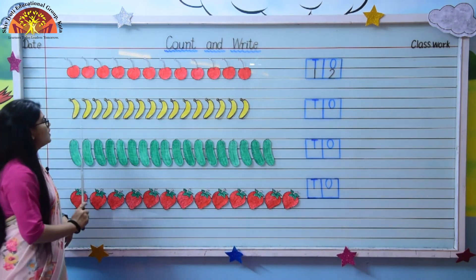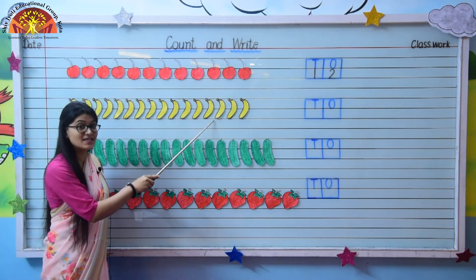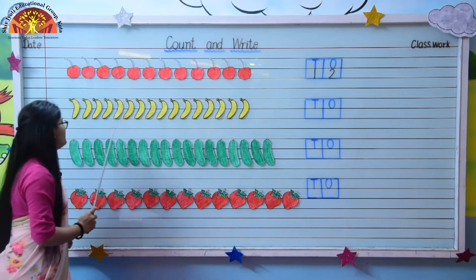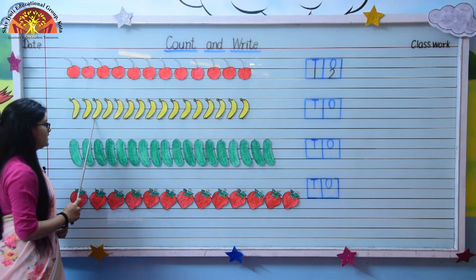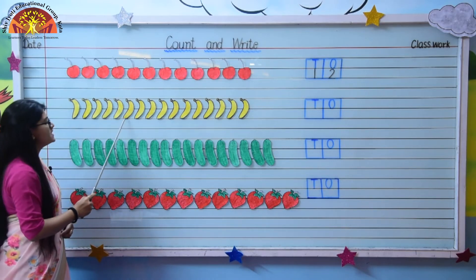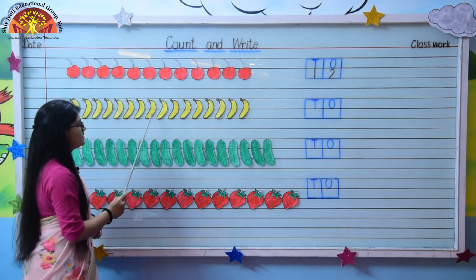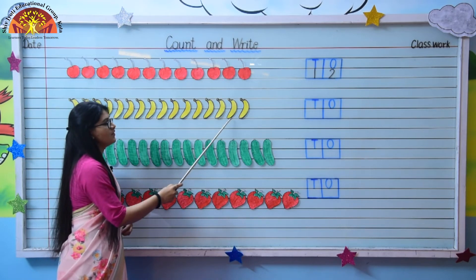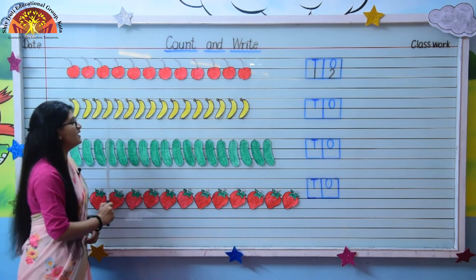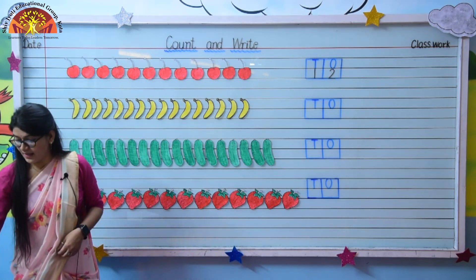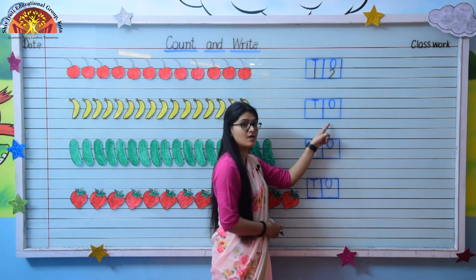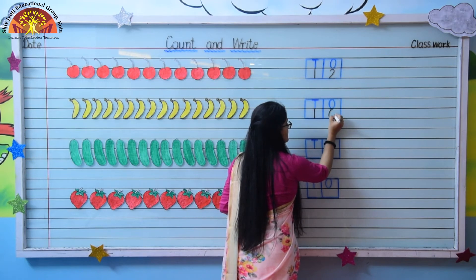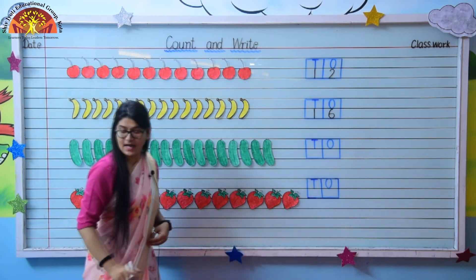Now look at the next one. What are these? These are bananas. So let's count — how many bananas are there? 1, 2, 3, 4, 5, 6, 7, 8, 9, 10, 11, 12, 13, 14, 15, 16. There are 16 bananas. So we will write 16 in the box. Write 1, 6 — 16.